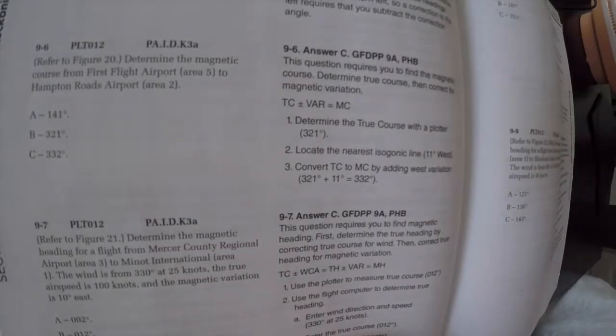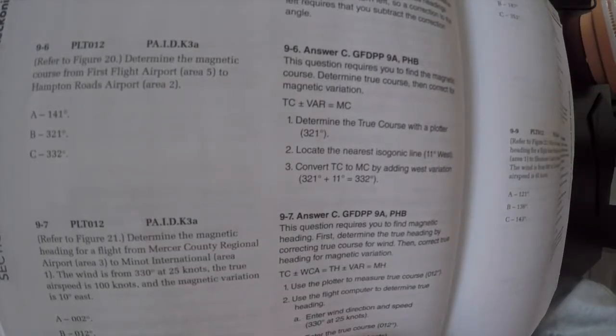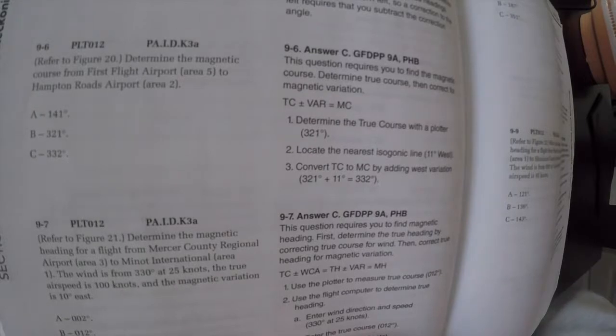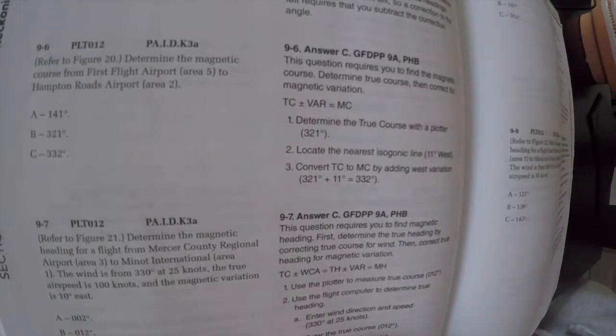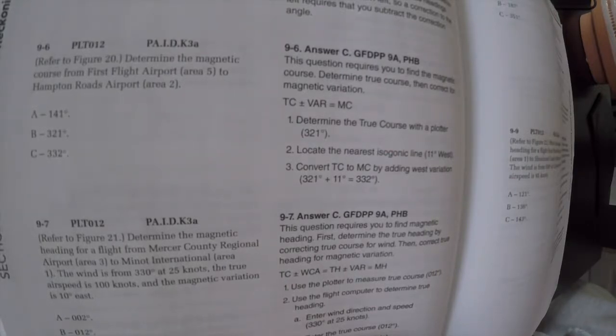Go back to our problem and look at what our possible answers are. We see 141, which is completely out there. We see 321, which is very similar to what we plotted as our true course. But again, we want magnetic course. So we're going to look down at C, 332 as our magnetic course. And that is the answer.